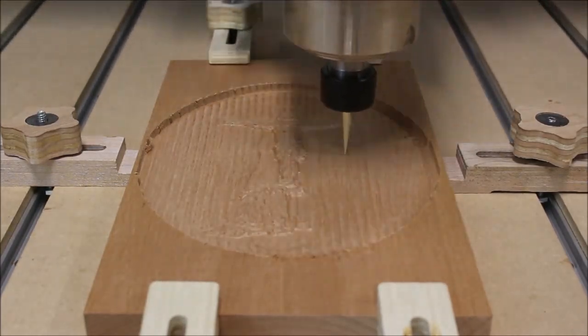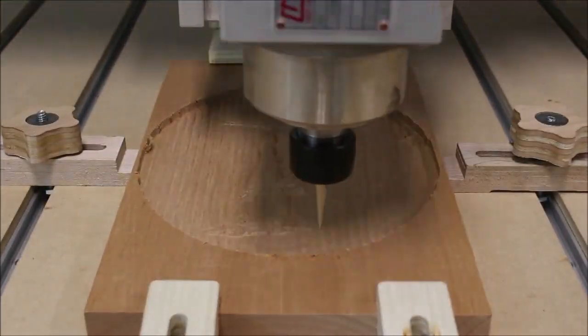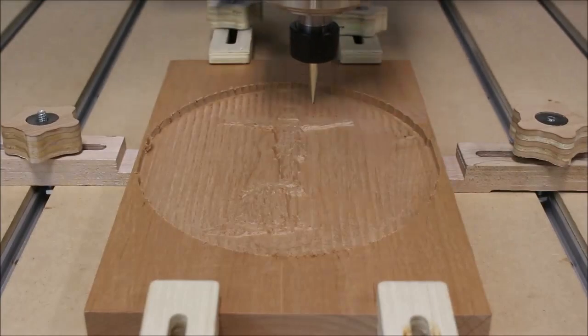Since this piece is kind of small, I decided to do two different finishing passes. Like I said, the first one was with a 1/8-inch tapered ball nose, and then this one is with the real fine 1/32nd.